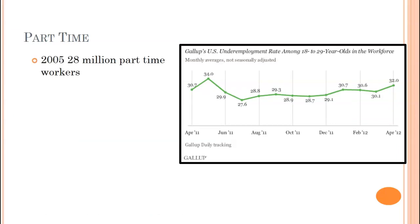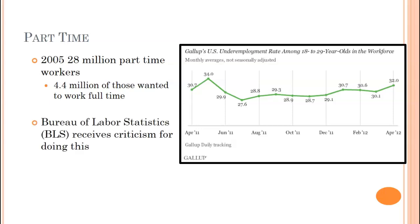Part-time workers: according to some data from 2005, 20 million people were part-time workers — they're still counted as employed. About 4.4% of these wanted to be more than part-time. The BLS receives criticism for evaluating unemployment rate this way. There are actually six versions of the unemployment rate; version three, the official one, doesn't distinguish between full-time and part-time, while other versions do take that into consideration.